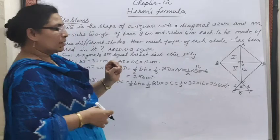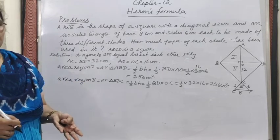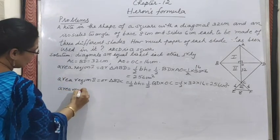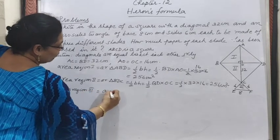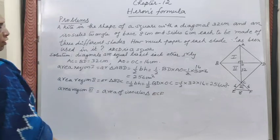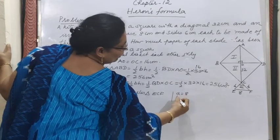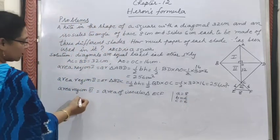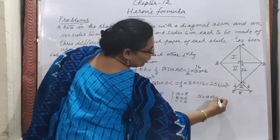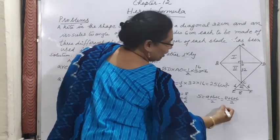For Region 3, the isosceles triangle ECF has three sides given, so we use Heron's formula. We write a = 8, b = 6, c = 6. Semi-perimeter s = (8 + 6 + 6)/2 = 20/2 = 10 cm.